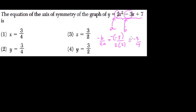x, since it's a vertical line for the axis of symmetry, it would be y equals 3 fourths if you had a horizontal line. Thanks.